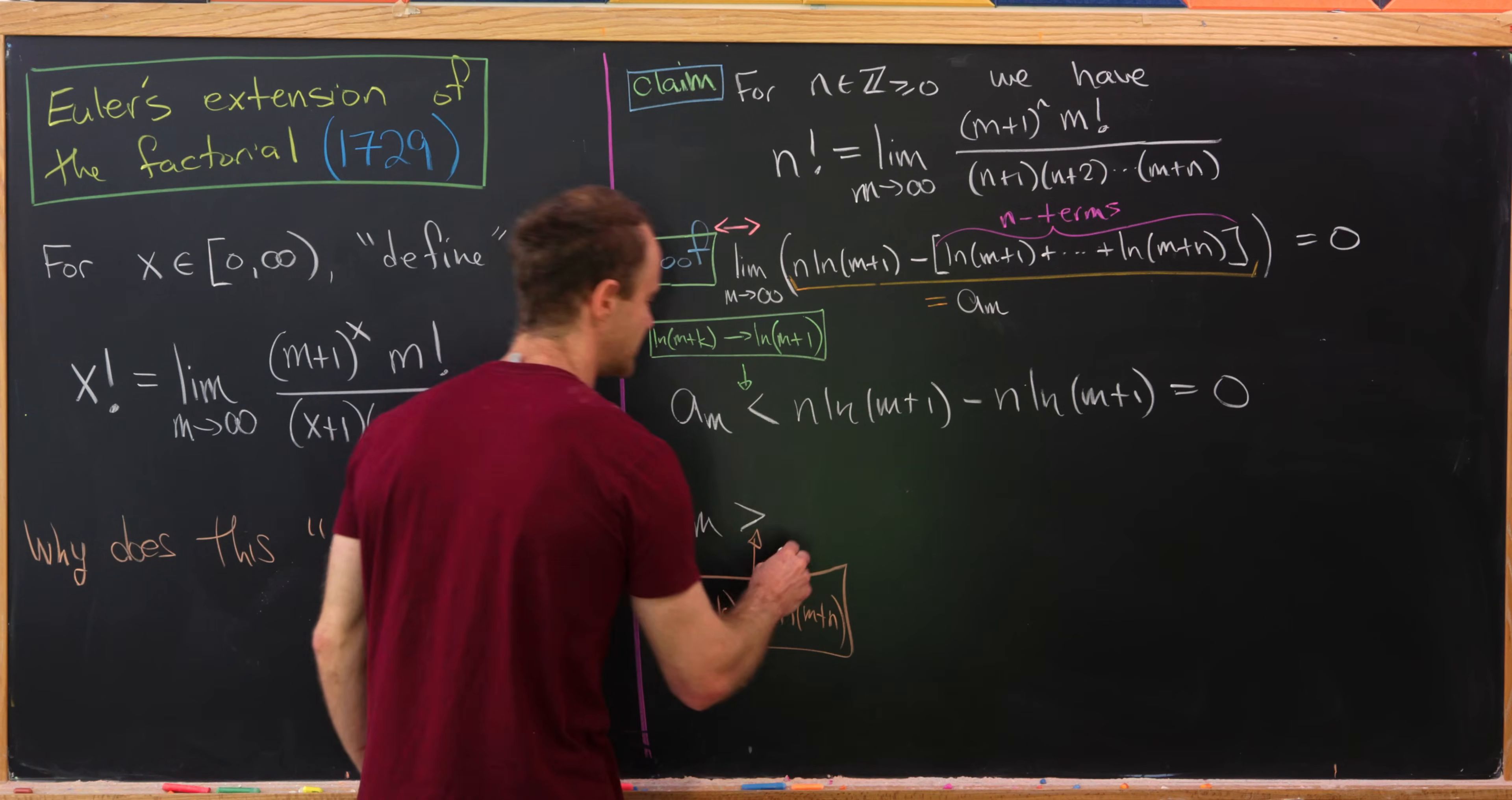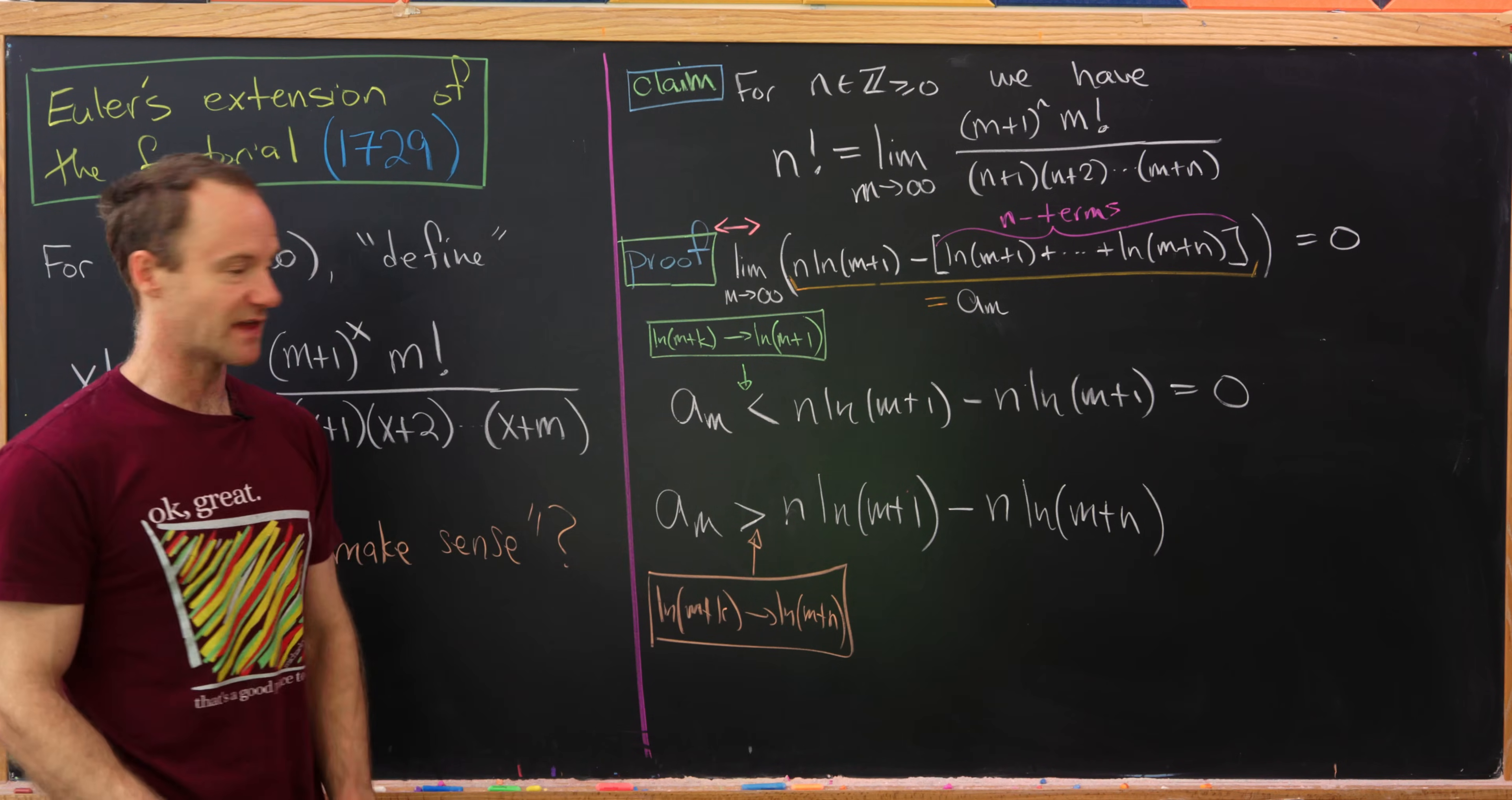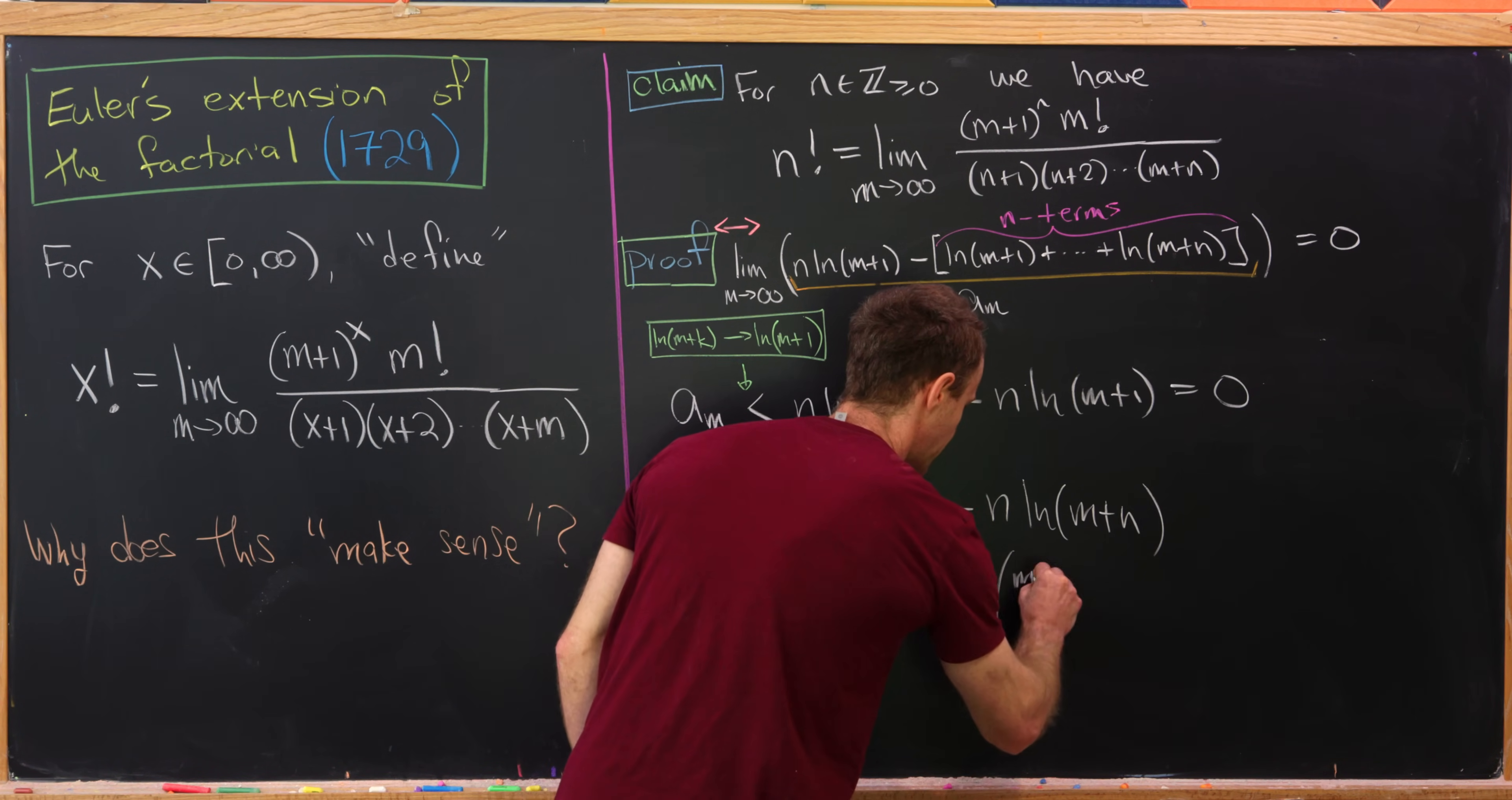We can bring down the n times ln(m+1) and now we subtract n times ln(m+n). Okay, so that's what we have there. Okay, but now let's combine those things. So we can take the n out front and we'll be left with ln((m+1)/(m+n)).